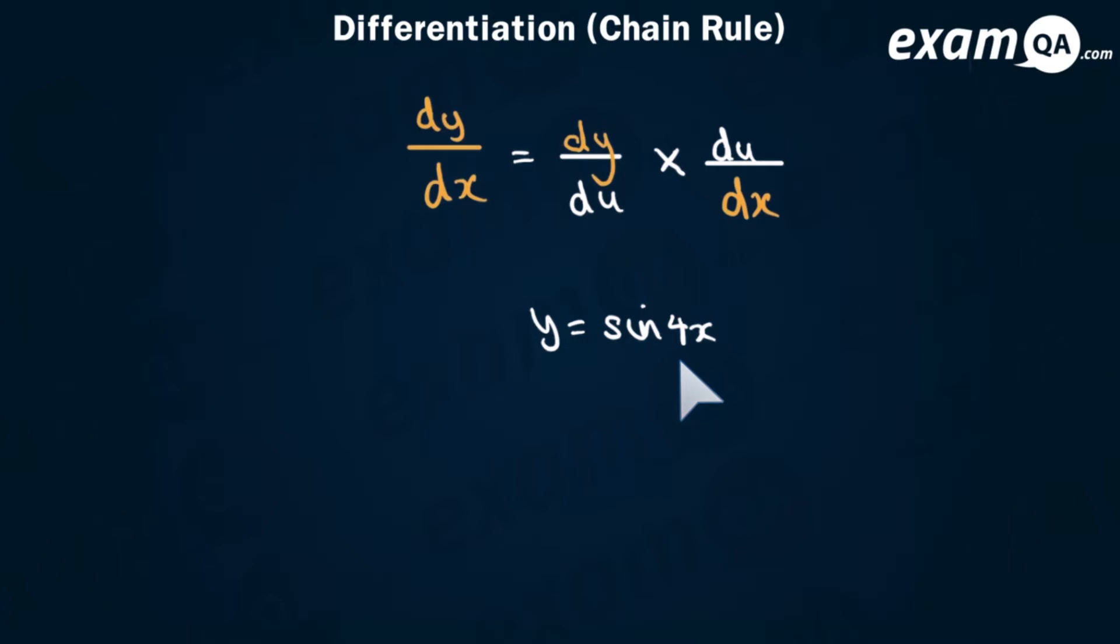Okay so the thing which is making it complicated is the 4x. So instead of writing 4x we're going to make that into u. So we've got y equals sine u. And of course we've made u equal to 4x. Now we're going to do some differentiation. So let's go ahead and work out dy/du. And here it's simply cos u. And we can also get du/dx which is 4.